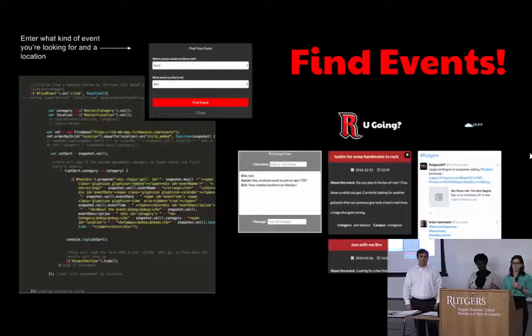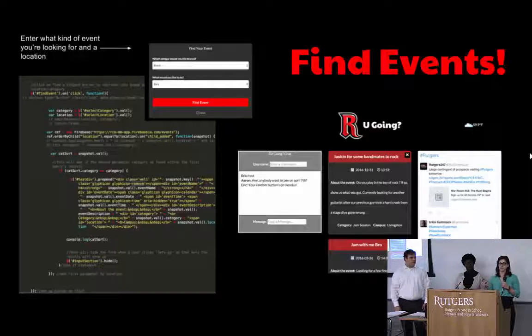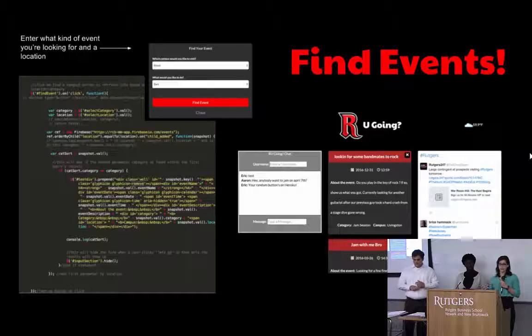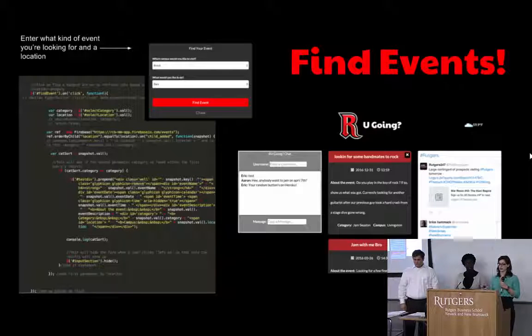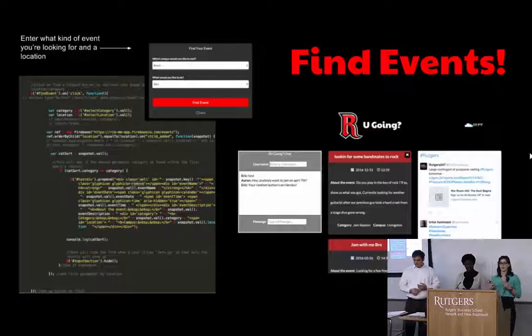One of the limitations with Firebase is that you can only query one thing. If you throw multiple queries, like I wanted to do two, it throws an error. So what I had to do is I had to insert a JavaScript function inside to further sort it. So I did it by category. So anything that matched maybe bars at Busch, then it would just only pop out things that had bars in Busch.